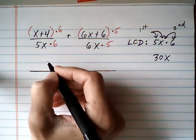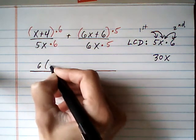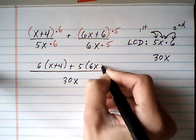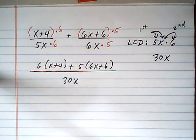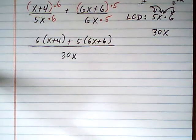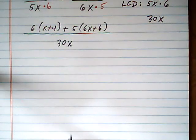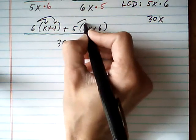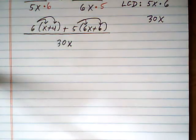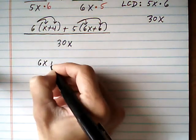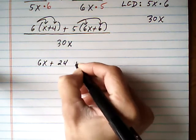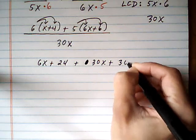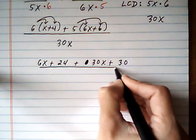And we can go across with our numerators. We have 6 times x plus 4 plus 5 times 6x plus 6. Now we're going to simplify the numerators. And then once they're simplified, we're going to factor to see if we can do any more reducing. So first we clear parentheses: 6x plus 24 plus 30x plus 30, and that's all over 30x.